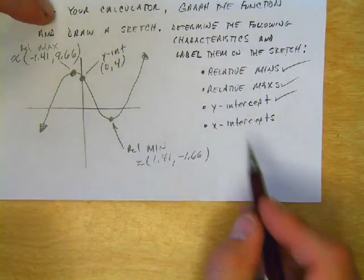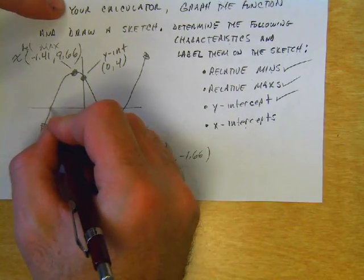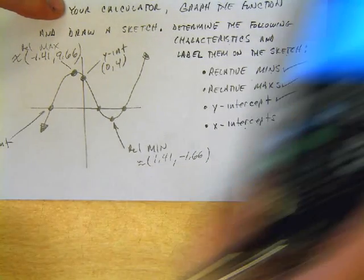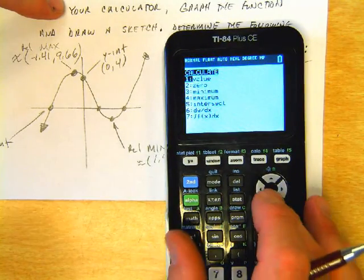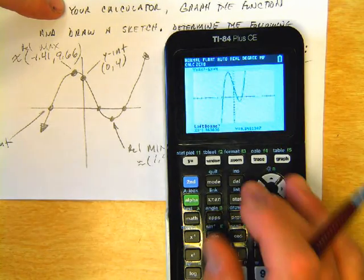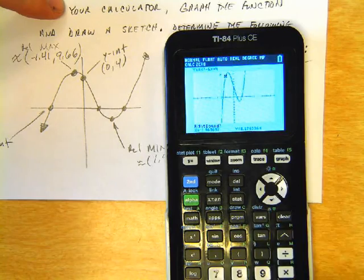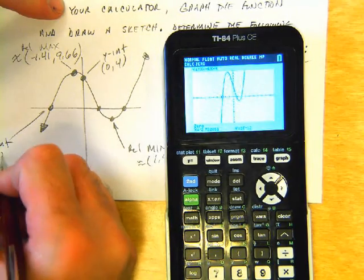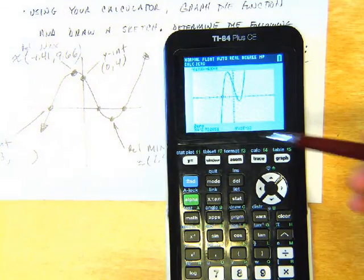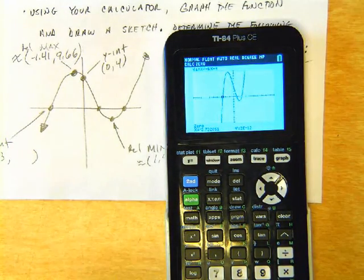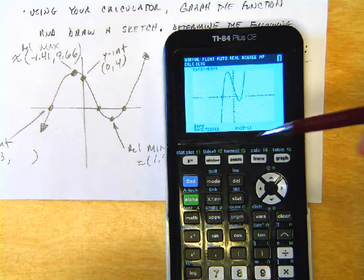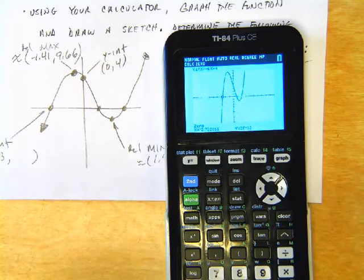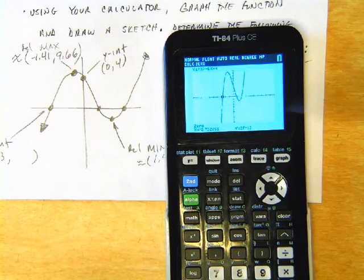Lastly, the x-intercepts. I see three of them. Let's label them and determine what they are. Second, Trace to go to the calculate menu. Number 2 is to find a zero. Set a left boundary, a right boundary, and guess. It's approximately (-2.73, ...) what is this 2e-12? That's 2 times 10 to the -12, so it's 0.0 with a bunch of zeros and then a 2. If you round that to the nearest whole number, what would it be? Zero.